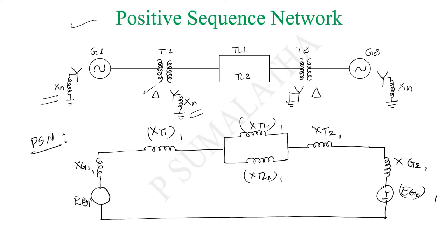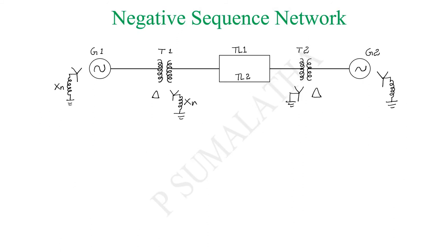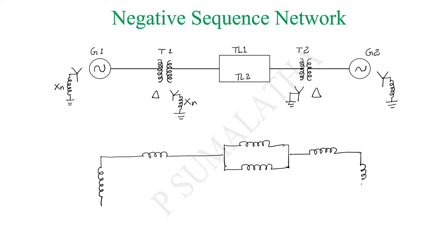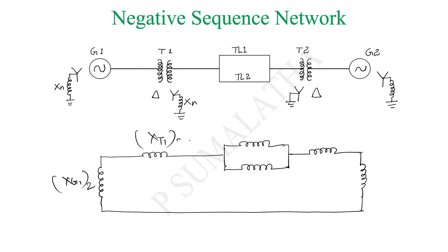Coming to the negative sequence, the changes needed are: replace EG1 and EG2 with short circuits, and represent all reactances with respect to negative sequence. So there are no sources. We have generator reactance, transformer reactance, transmission line 1, transmission line 2, transformer 2, and another generator reactance. All impedances are represented with negative sequence quantities: XG1 negative sequence, XT1 negative sequence, XTL1 and XTL2 negative sequence, XT2 negative sequence, and XG2 negative sequence.